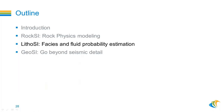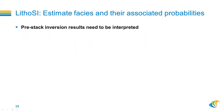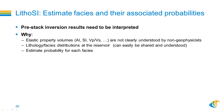Going to LITOSI: we want to interpret our inversion results to calculate facies and fluid probability volumes. Pre-stack inversion results need to be interpreted because elastic properties like acoustic impedance, shear impedance, and Vp/Vs are not clearly understood by non-geophysicists, especially reservoir engineers. Lithology and facies distribution at reservoir scale is required — it can be easily shared and understood by geologists, reserve engineers, and geophysicists alike. We want to estimate probability for each facies, which is why we use LITOSI.